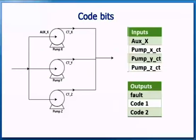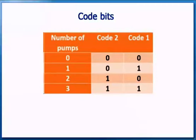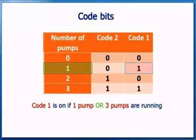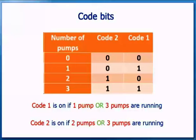The next step is to look at the code bits. We need to program the two code bits so that they indicate how many pumps are running. This table shows how we can use two bits to show how many pumps are running. Code 1 comes on when one pump or three pumps are running. Code 2 comes on when two pumps or three pumps are running. Note that we are not specifying which pumps, just the number. We can create three internal relays: one pump, two pumps, and three pumps.